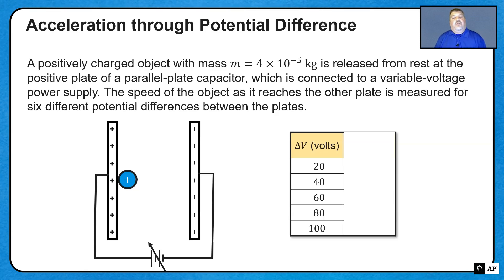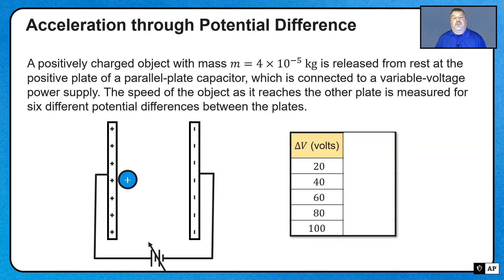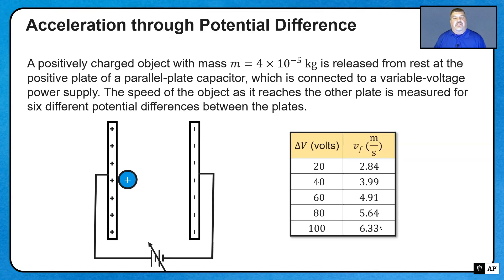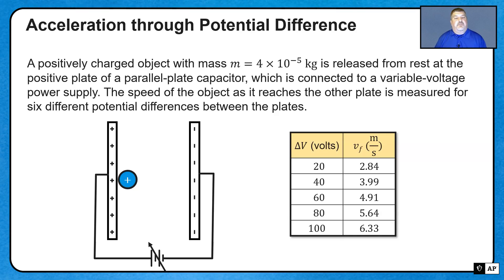The greater the potential difference, the stronger that electric field is. A bigger electric field causes a bigger force on the charged object, giving it a larger acceleration. So that charged object will have greater speeds when it reaches the other plate for those greater potential differences. And looking at the data, we can see that those speeds do get bigger as the potential difference gets bigger.